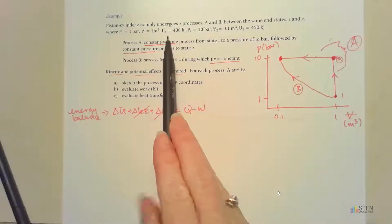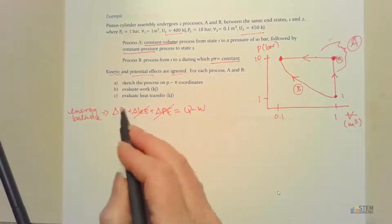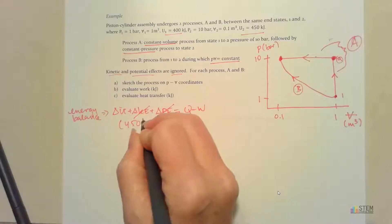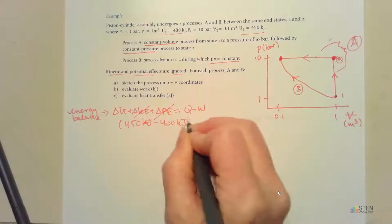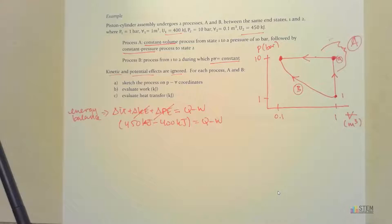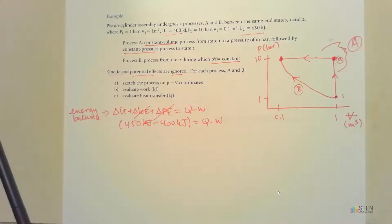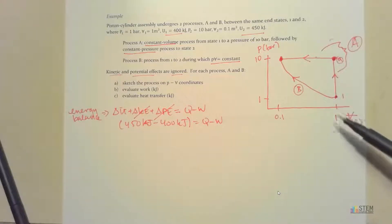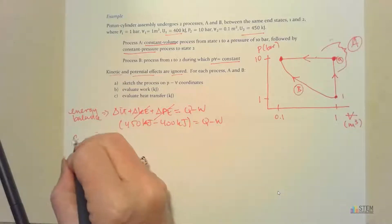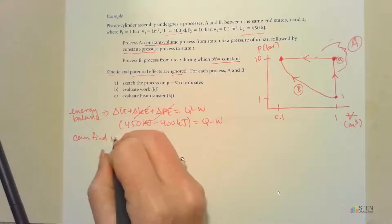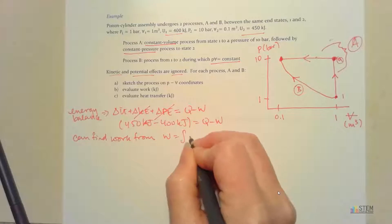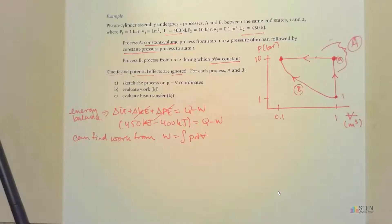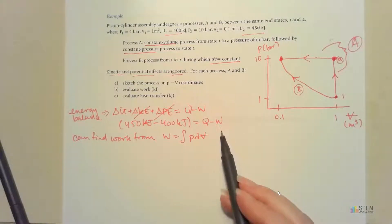The internal energy values were given, so delta U equals 450 minus 400 kilojoules, giving 50 kilojoules equals Q minus W. However, this is one equation with two unknowns. Since we have a piston-cylinder assembly with volume changes, we'll use the work equation: W equals the integral of pressure dV. We'll find work for each process first, then plug back in to find Q.